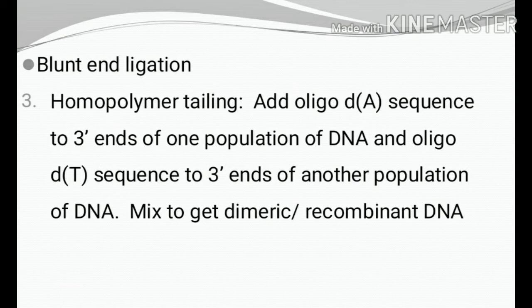The third method of blunt-end ligation is homopolymer tailing. An oligo-dA sequence is added to the 3-prime ends of one population of DNA — say the foreign DNA — and an oligo-dT sequence is added to the 3-prime ends of another population of DNA — the vector DNA. These are then mixed to get the recombinant DNA.